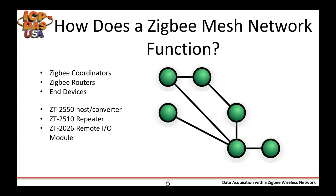There's the ZT-2510 repeater module, which is just used to extend the signal. And then there is our ZT-2026 remote I/O module, which is a data acquisition module with two voltage in-and-out channels and two digital in-and-out channels, and that communicates with its parent node, which could be any of our ZigBee masters or repeaters.